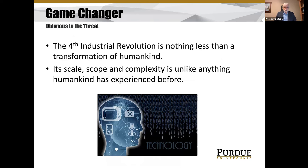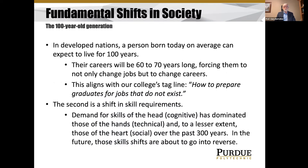We are truly in a game changer. It's nothing less than the transformation of humankind. Its scale, scope, and complexity is unlike anything humanity has ever experienced, and so it's even hard to predict what the future is going to be like. In developed nations, a person born today on average can expect to live for 100 years, and their careers will be much longer because they will be healthier. One of our college's taglines here is: how do you prepare graduates for jobs that do not exist? The shift in skill requirement means that where cognitive, technical, and social skills existed, social and technical will now be dominant over cognitive over the next century.